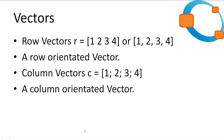Octave also handles vectors natively. A vector is a list of values that can be arranged in a row or column. We can create a row vector using square brackets and specifying values with spaces in between — commas are optional. We can create column vectors using square brackets as well, but separating each value with a semicolon. This is easier to visualize in Octave, so let's give it a try.